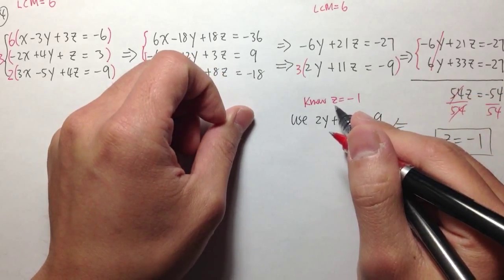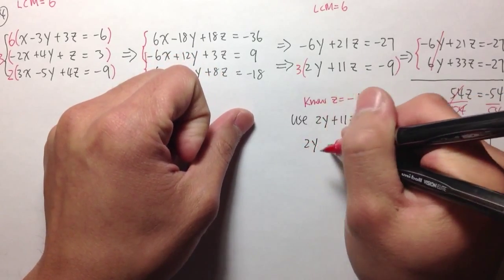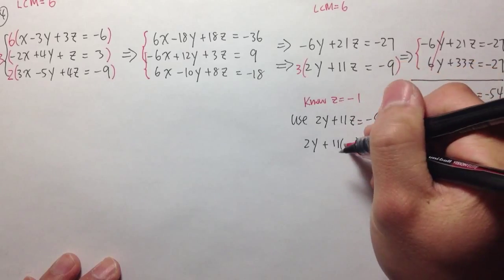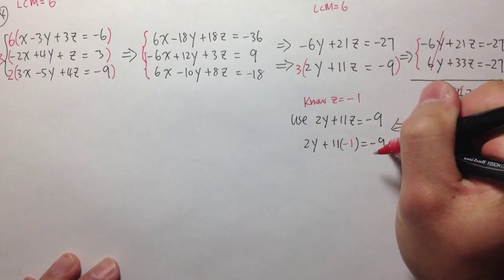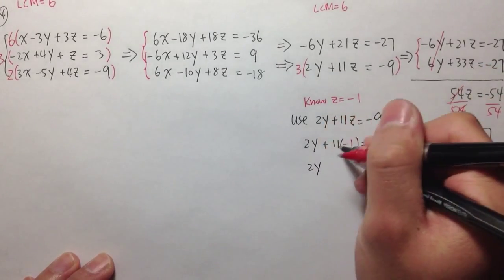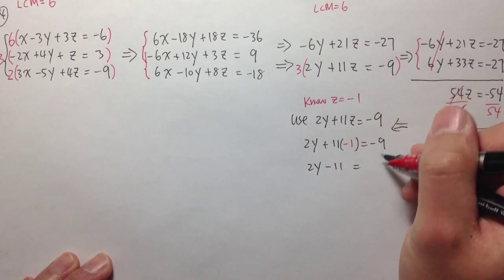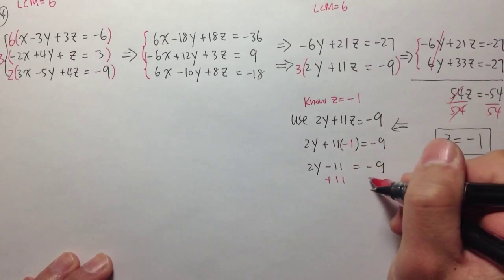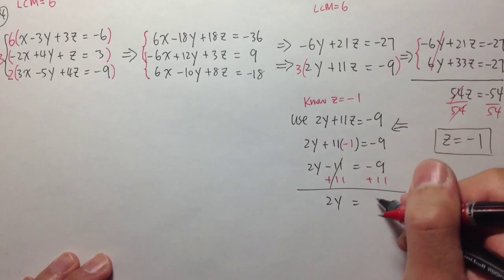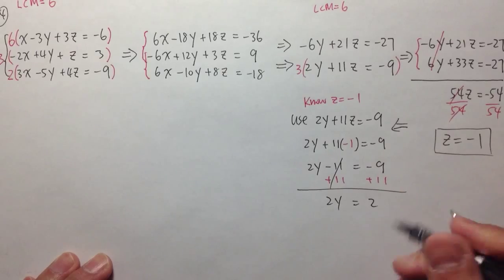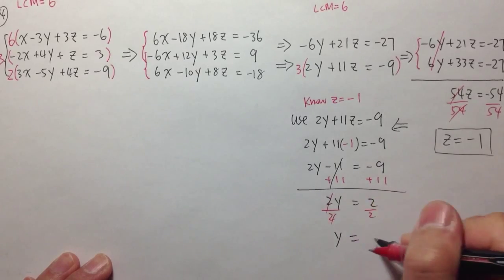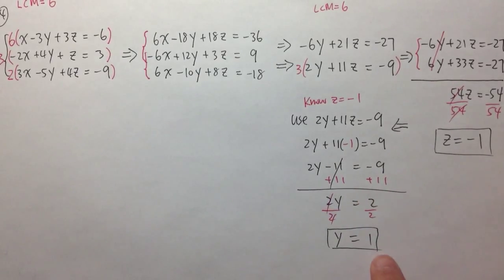I plug in negative 1 for z: 2y plus 11 times negative 1 equals negative 9, which gives 2y minus 11 equals negative 9. Adding 11 to both sides: 2y equals negative 9 plus 11, which is 2. Dividing both sides by 2, we get y equals 1.